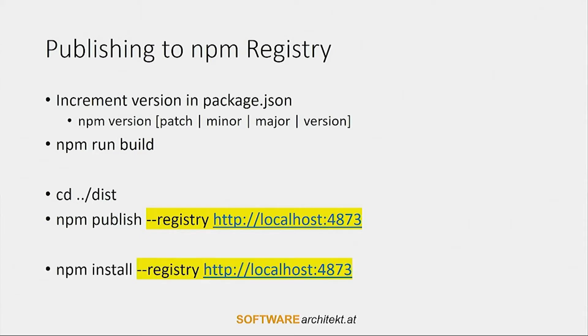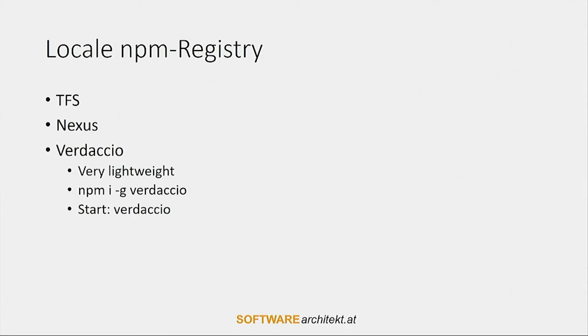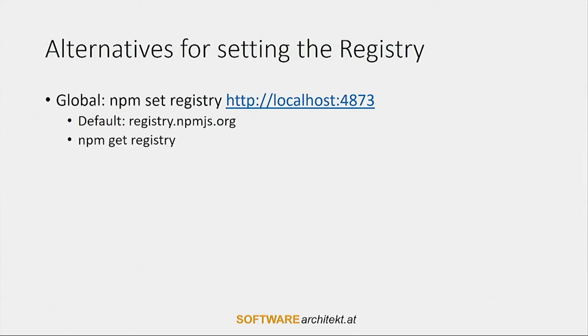Without pointing to a specific registry you are publishing to the official NPM registry on the internet. You can do the same when npm installing a library — you can also provide a registry flag. There are some registries out there for local usage: for instance Team Foundation Server for people using Microsoft products, Nexus which many of my Java customers use, and when you're looking for a lightweight solution you can go with Verdaccio — a lightweight NPM package that can easily be downloaded and started. You can override the default registry at your machine with npm set registry, or provide a .npmrc file in the root of your project.